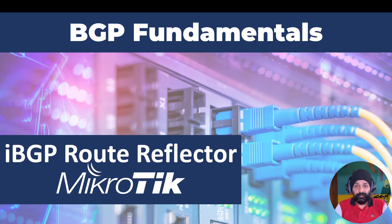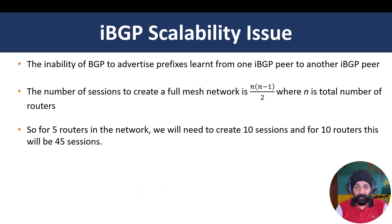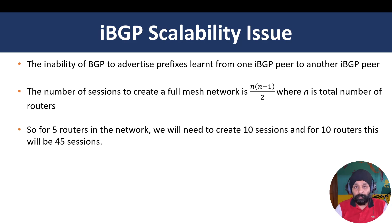Welcome to another edition of BGP fundamentals. In the previous video we discussed iBGP and ended with a problem: why iBGP is not scalable. If we mesh each and every router — establishing neighborships between all routers in the network — we need a lot of peering. For example, with 10 routers we'd need 45 peering sessions. Adding just one router requires establishing connections with all others, which is not practical.